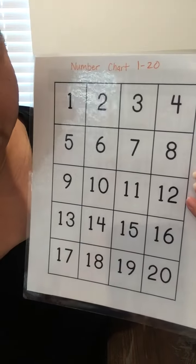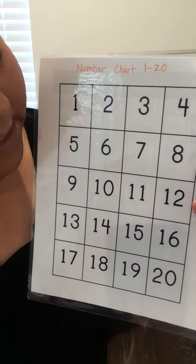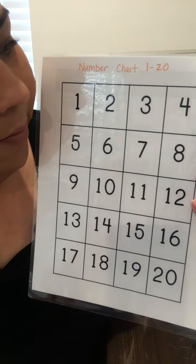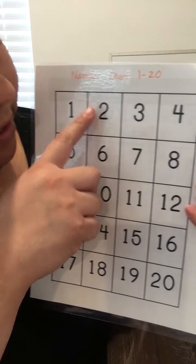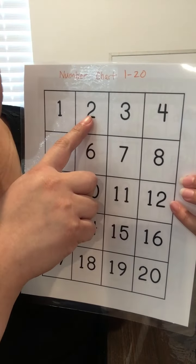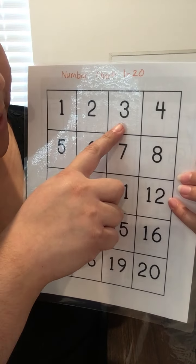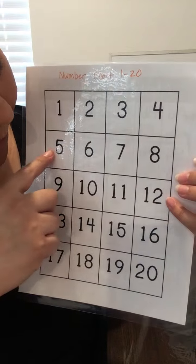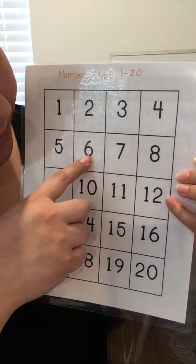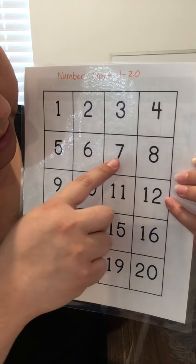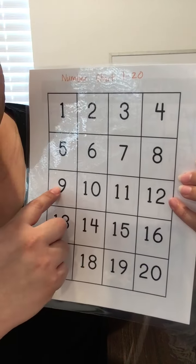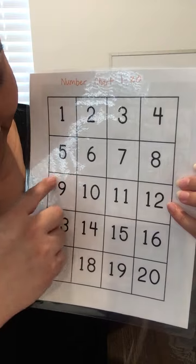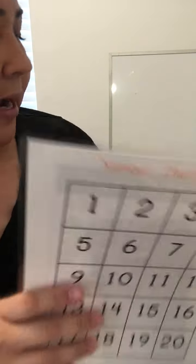Now let's take our number chart and let's count to the number 9. Help me. 1, 2, 3, 4, 5, 6, 7, 8, 9. This is the number 9. That's right.